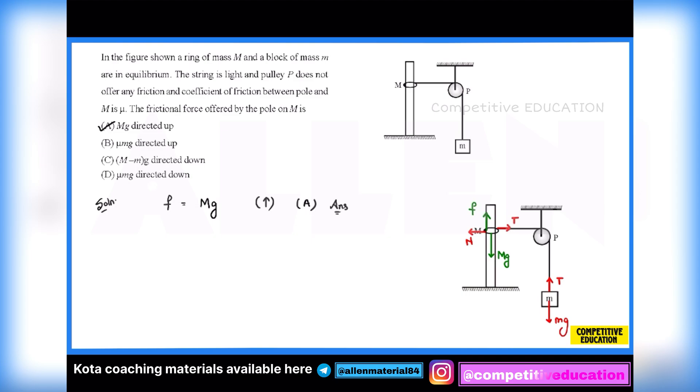Now some of you must be having a doubt about option B. You must have written for the small block, tension equals mg. Then you might have written normal equals tension, from here you achieved the value of normal as mg. Now you must have written friction force equals mu times normal, that is mu times mg, and it is acting in the upward direction, so you must be getting option B.